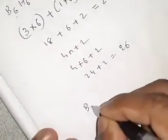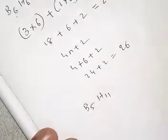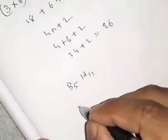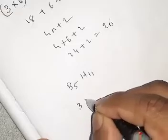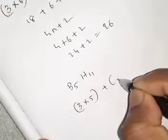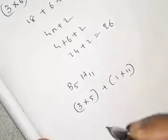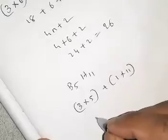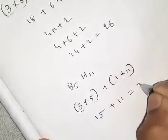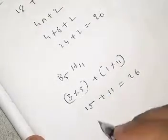Next, I am going to work on B₅H₁₁. The calculation: 3 into 5 (number of boron atoms) plus 1 into 11 gives 15 plus 11, which equals 26. So for Nido, the number of boron atoms is 5.